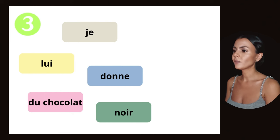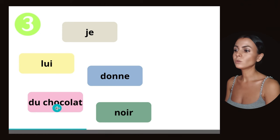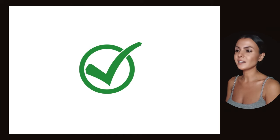And the last one: I give him or her black chocolate. So we have: lui (him, her), du chocolat (chocolate), noir (black), donne (give). I let you write down your answers.